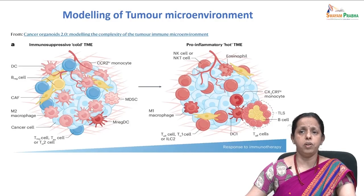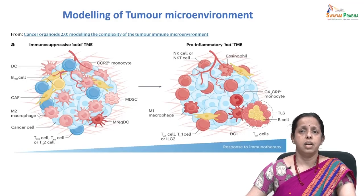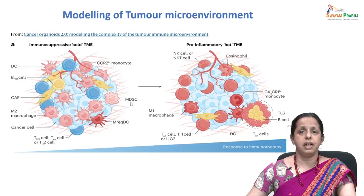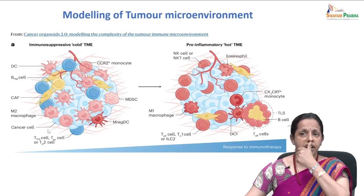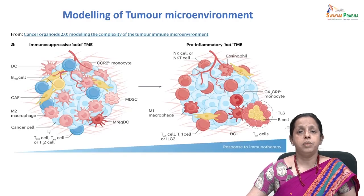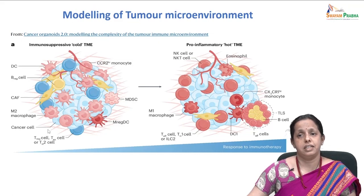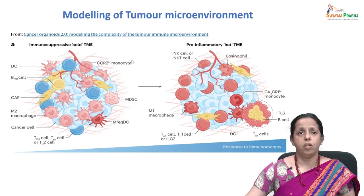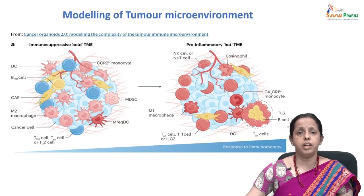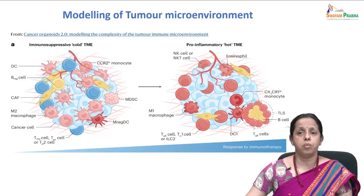Such immune infiltrations include M2 macrophages, myeloid-derived suppressor cells (MDSCs), CD4+ T helper cells, regulatory T-rex cells, terminally exhausted CD8 T cells, regulatory B cells, CCR21 cells, monocytes, and mature dendritic cells — all enriched in immunoregulatory molecules.